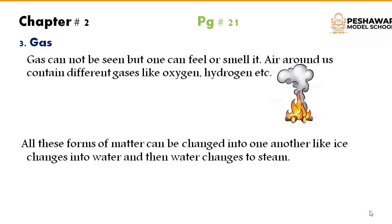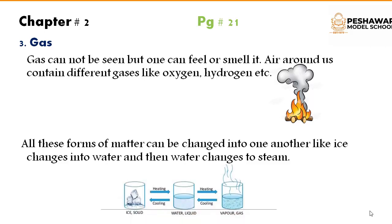All these forms of matter can be changed into one another — like ice changes into water and then water changes into steam. As you can see in this picture, the first picture is of ice. On heating, ice is converted into water. Then on further heating, the water is converted into steam. On cooling, the steam is converted into water, and on further cooling, the water is converted into ice.